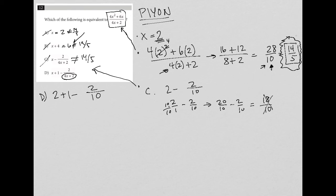And then I'd have 2 plus 1 is 3. So 3 minus 2 over 10. Turn this into a fraction. Get a common denominator.